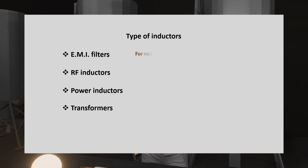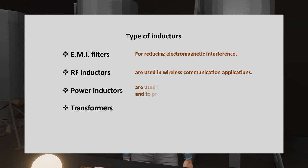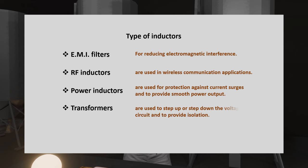EMI filters are used to reduce electromagnetic interference. RF inductors are usually used in wireless communication applications. This is due to their ability to be optimized for the highest signal integrity. Power inductors are used in power packs for power protection against current surges and to provide smooth power output. Transformers or coupled inductors are used to step up or step down the voltage in a circuit and to provide isolation.